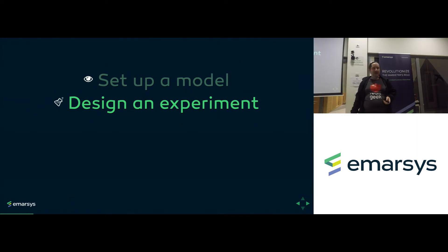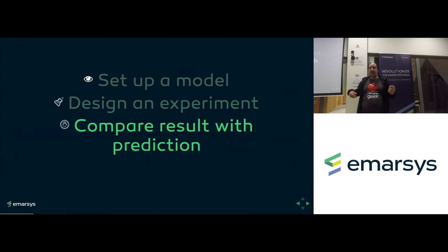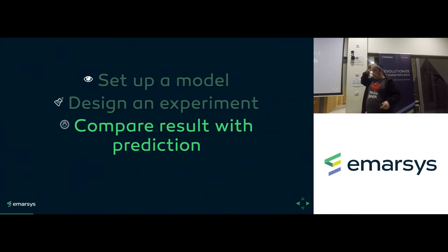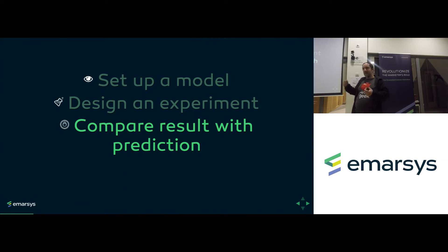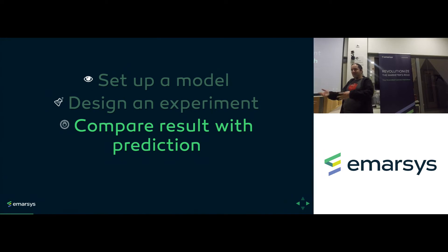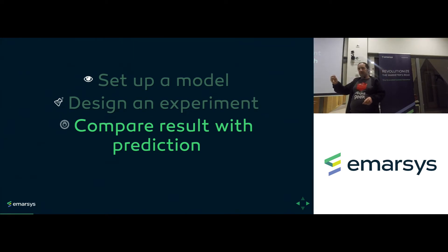We want to make sure that whatever predictions we make are correct, then we compare the result with what the model says. And this is the interesting part: if we're talking about belief systems, when new information conflicts with our worldview, we might not be happy. For science it's the other way around. The sound of a great scientific result is not heroic — it's 'wow, that's strange,' because that's what we're looking for: things that break our model, showing us where to tweak it.